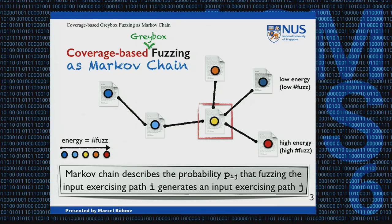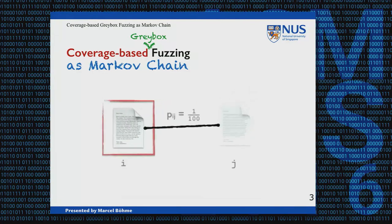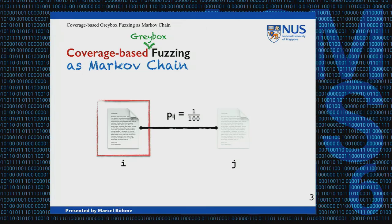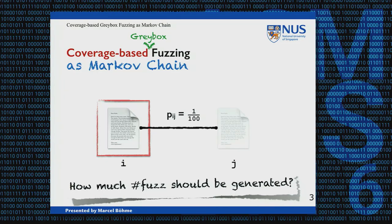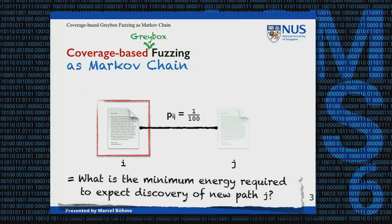Some states are visited with less probability, existing in a low-density region of the stationary distribution of the Markov chain. We extend the Markov chain model by adding energy to each of the states. Energy is a local property local to each state, unlike simulated annealing where temperature is a global property. If a state has high energy, we generate a lot of fuzz from that state; if it has low energy, we generate only a few test cases. What assigns the energy is called a power schedule, and the power schedule is one of the contributions in our paper.